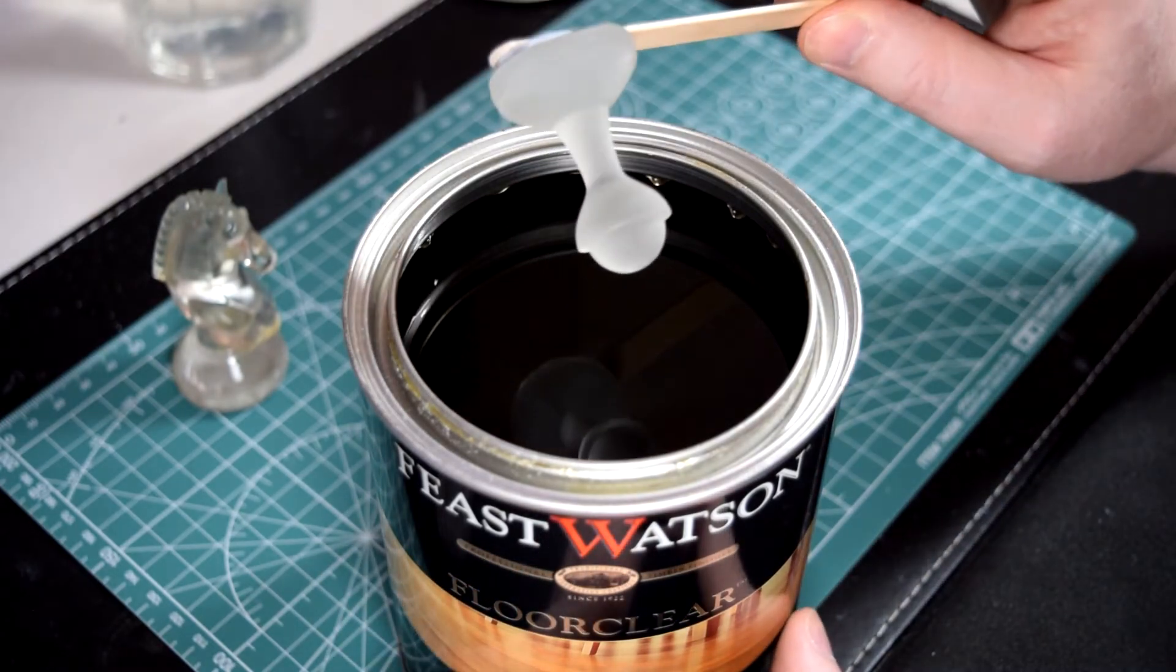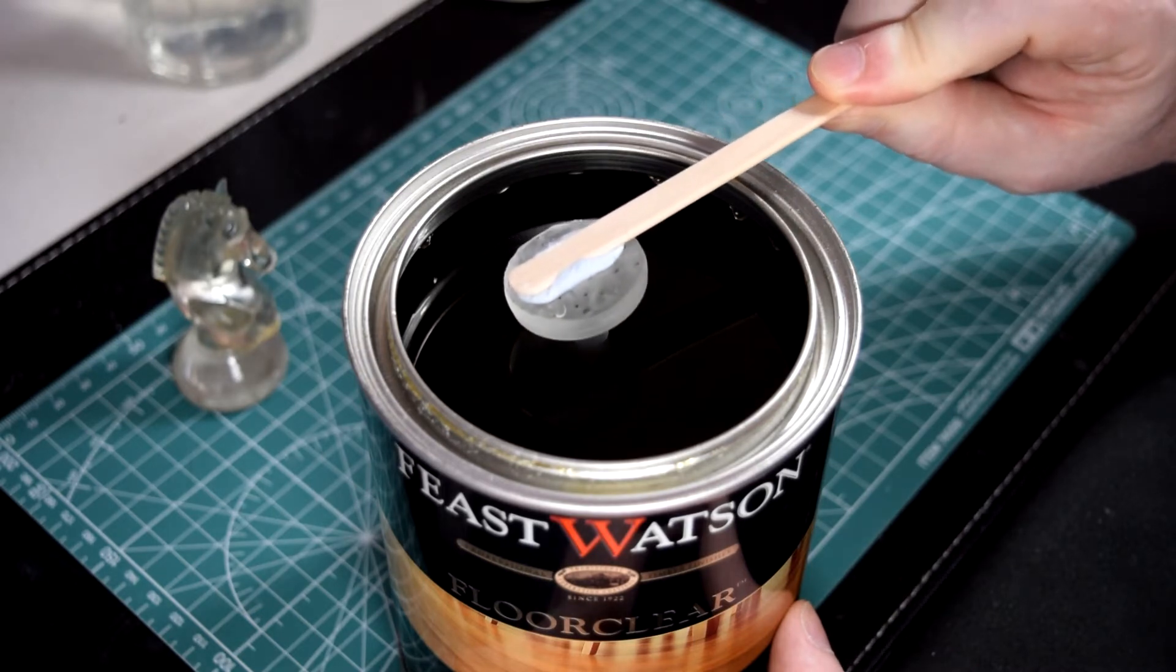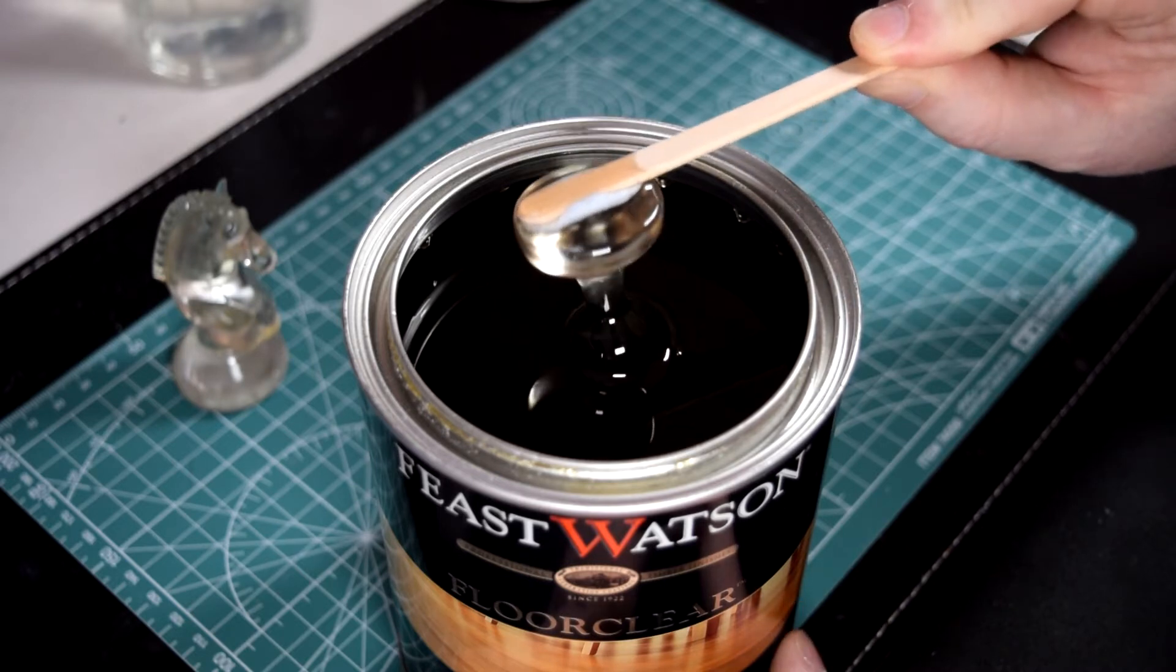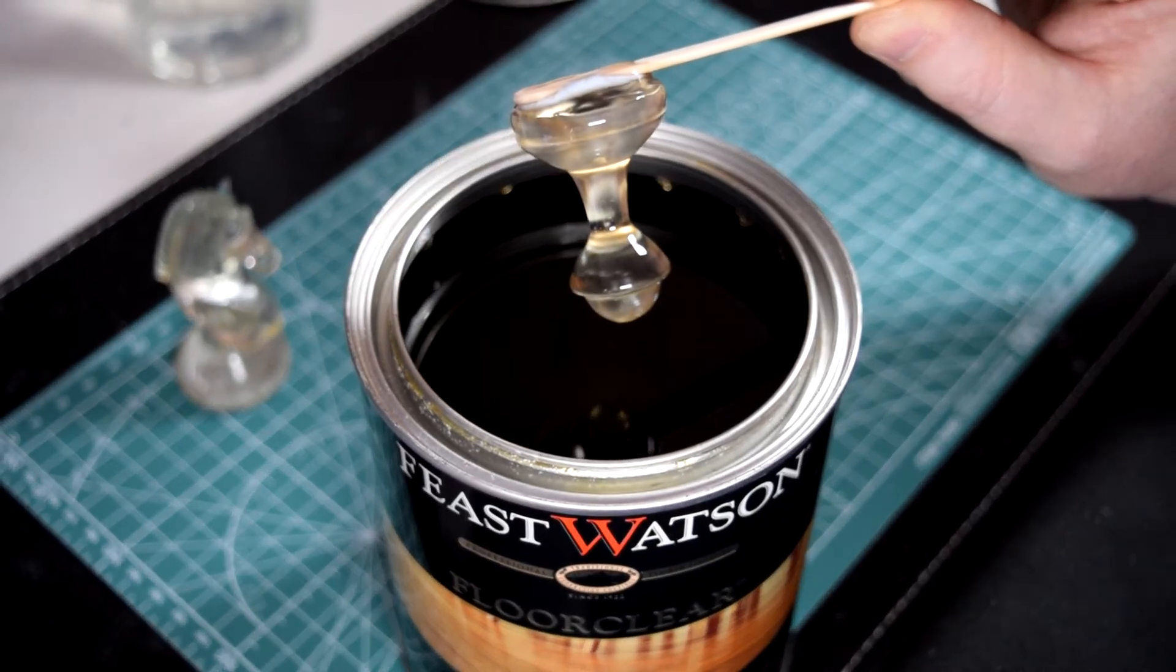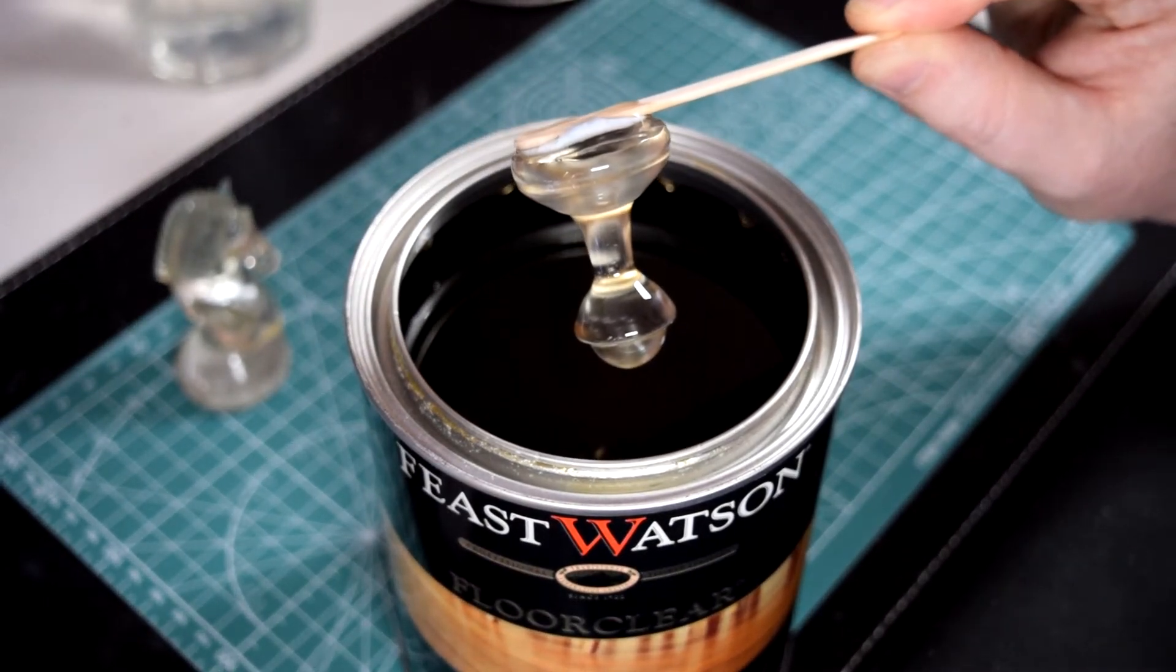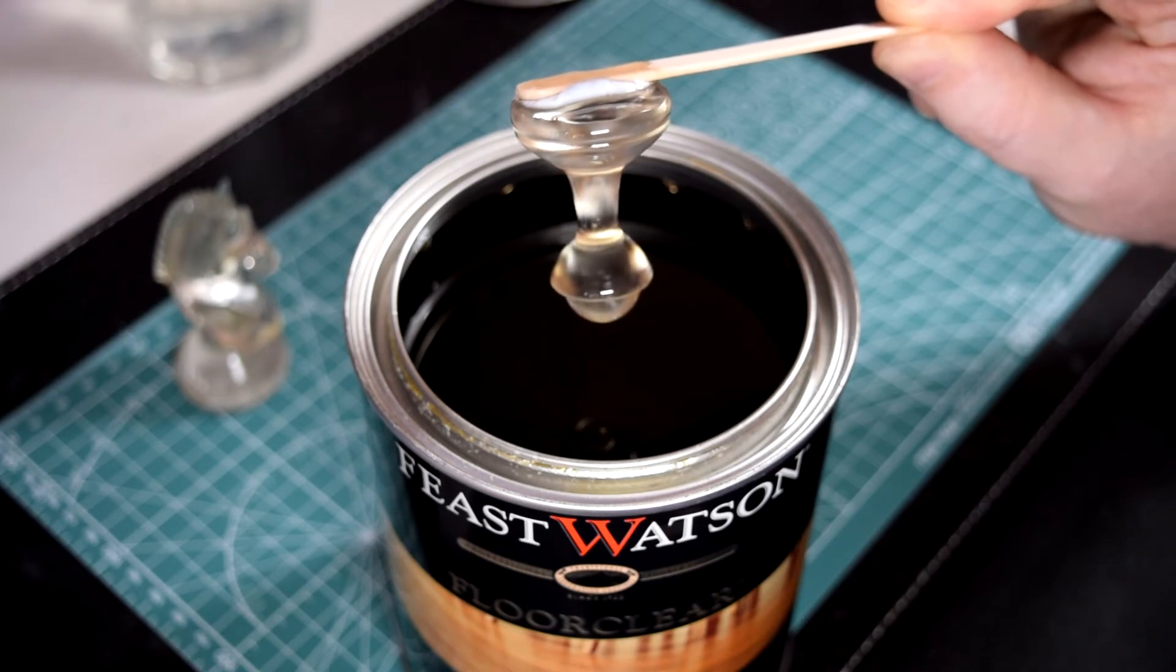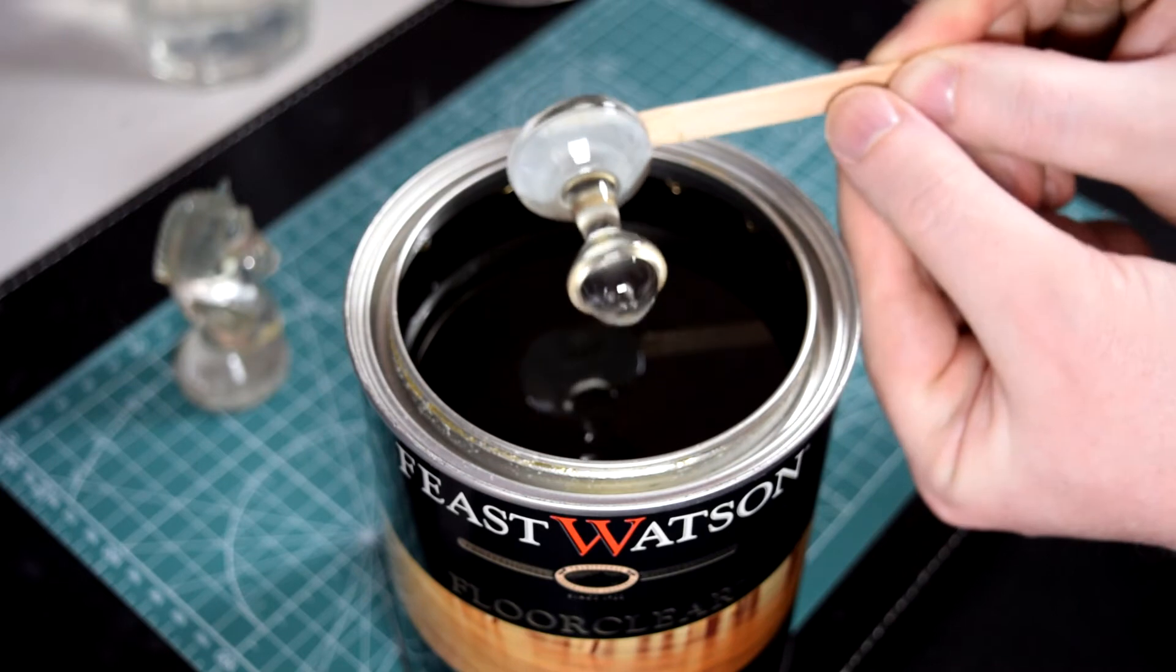Okay, you need to dunk the whole thing in the floor polish, and then let it drip for a couple of minutes. Now, when it comes out, turn it slowly to let it drip on all sides. It will take two or three minutes before it stops dripping.